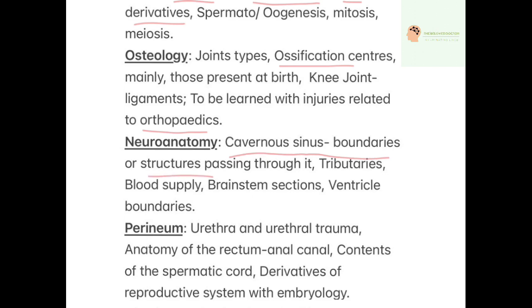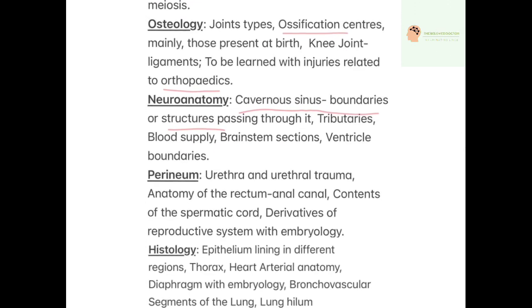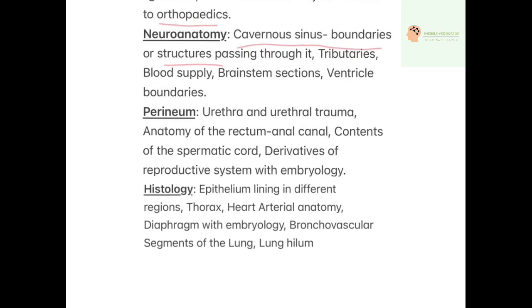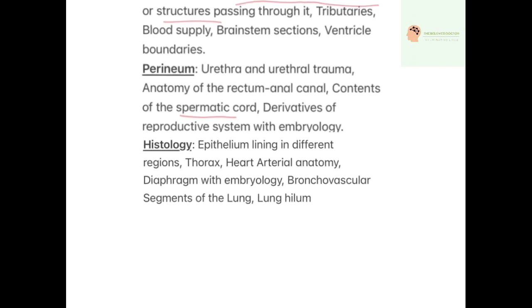From the perineum, important topics include the urethra and urethral trauma, anatomy of the rectum and anal canal, contents of the spermatic cord, and derivatives of the reproductive system with embryology. From histology, focus on epithelial lining in different regions, thorax, heart, arterial anatomy, diaphragm with embryology, and bronchovascular segments of the lung. That was all about anatomy.